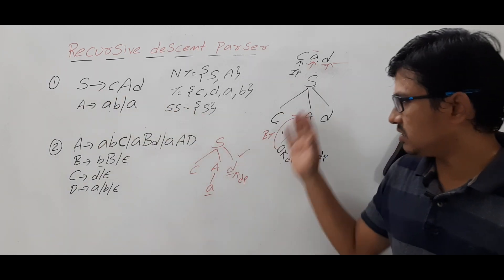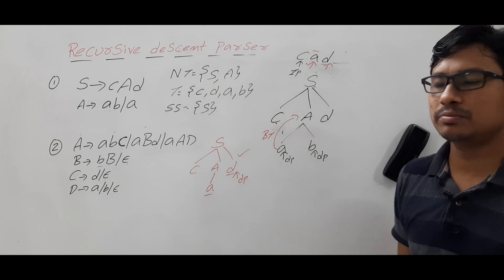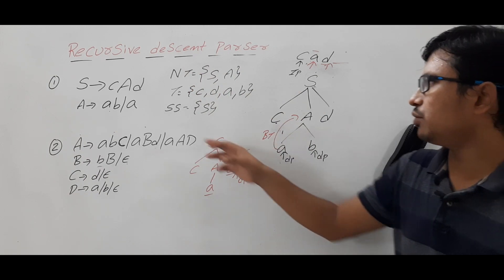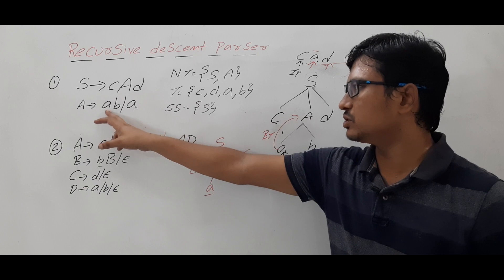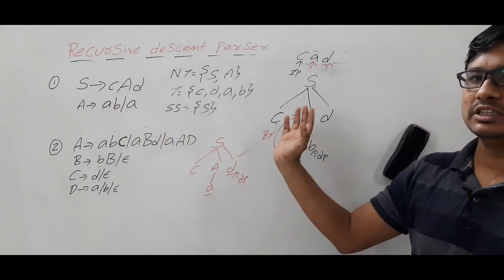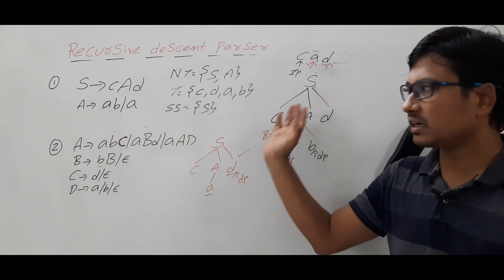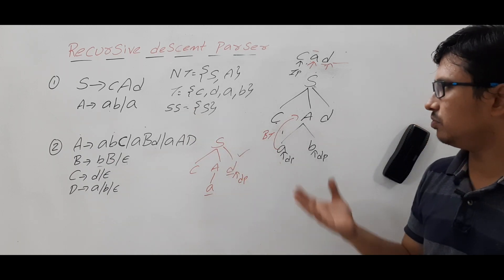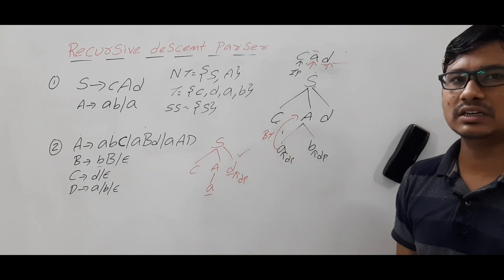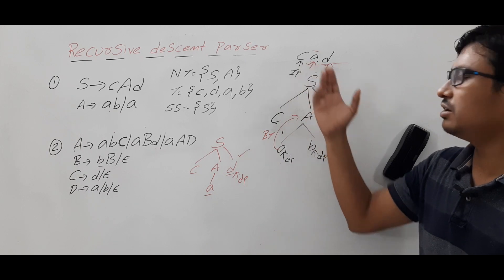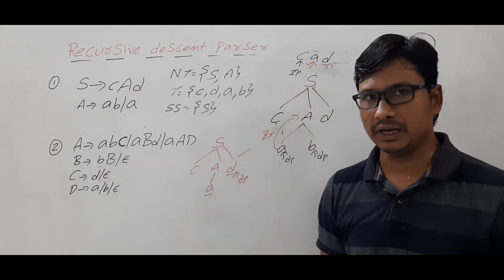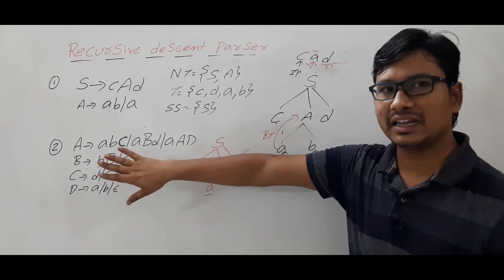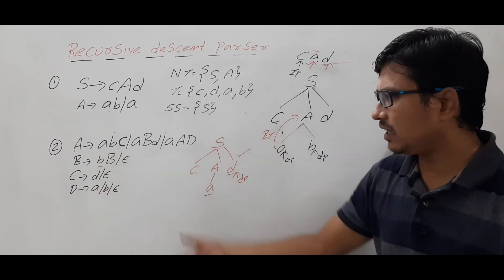This is the parse tree for the given string from the given grammar. This is how the recursive descent parser constructs it. We used brute force — first one choice, and if not matching, we went for backtracking. So it uses brute force and backtracking mechanism to construct the parse tree for a given string and grammar.